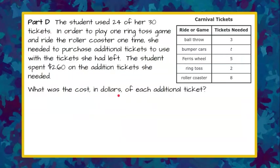Part D: The student used 24 of her 30 tickets. In order to play one ring toss game and ride the roller coaster one time, she needed to purchase additional tickets to use with the tickets she had left. The student spent $2.60 on the additional tickets she needed. What was the cost in dollars of each additional ticket? Please pause now and come back when you're done.